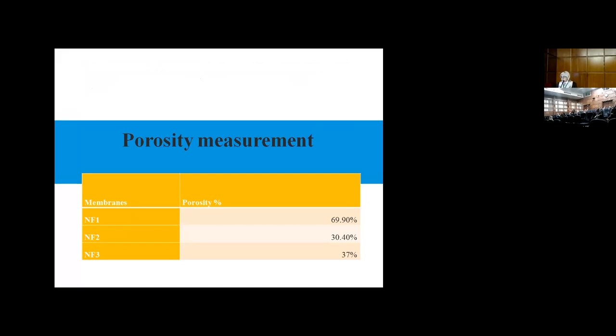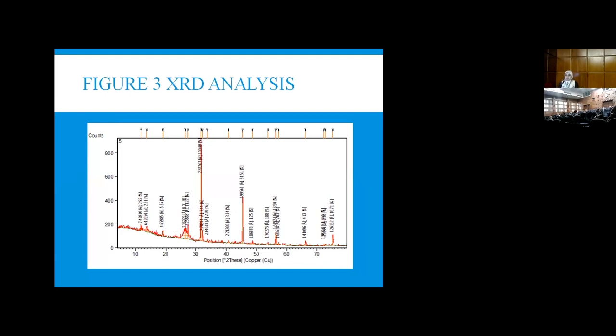The flux test shows that the highest flux is for NF1, and the lowest one is for NF2. That depends on porosity to adjust the permeate flux or the separation. XRD is for the nanomaterial, which is magnesium oxide.